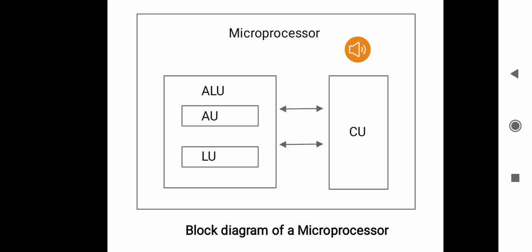The bidirectional arrows in this block diagram show the coordination between the arithmetic logic unit and the control unit. Bidirectional here means that the coordination is happening from both sides, that is from the arithmetic logic unit to the control unit and from the control unit to the arithmetic logic unit.